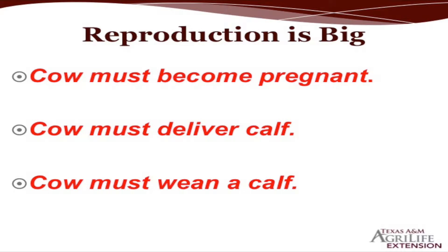Reproduction is the key if you're in the cow-calf business. Why keep a cow if you don't want to get her bred and wean a calf? She must first become pregnant, then deliver a calf. SPA data tells us we get about 90% of them pregnant on average, but we've got to deliver a calf and then wean a calf — because if we can't sell that calf, there's no profit.